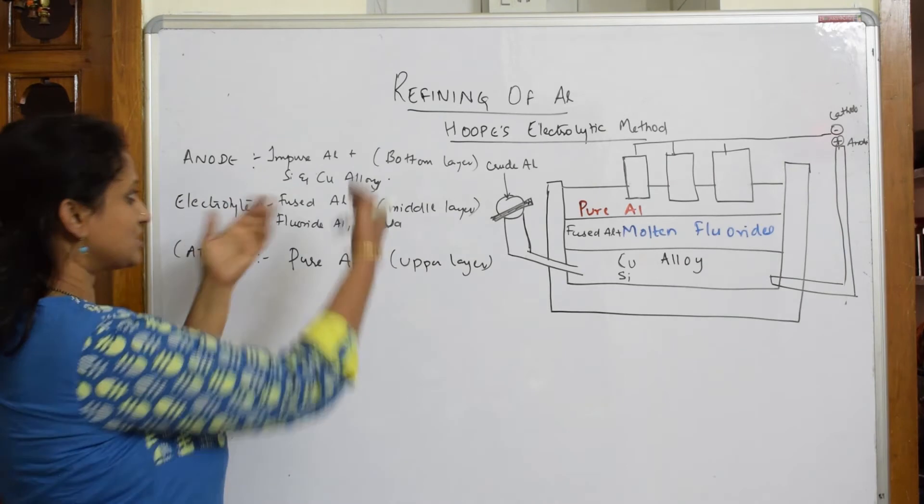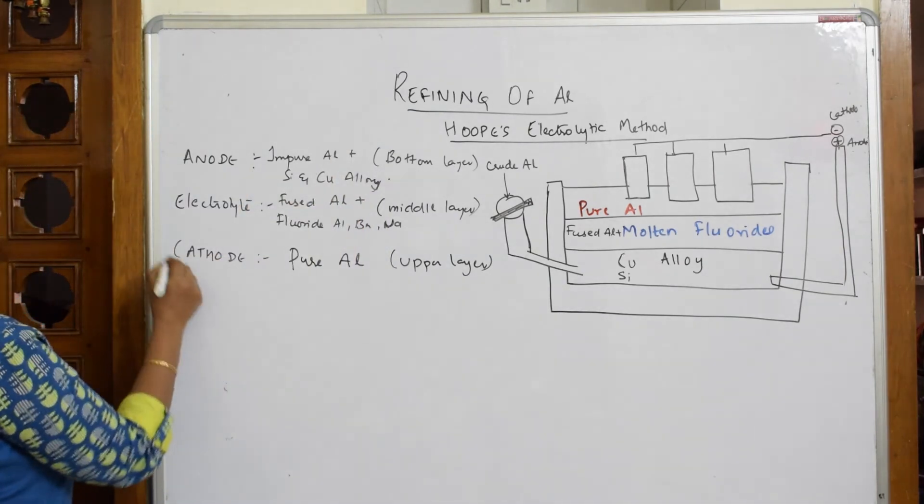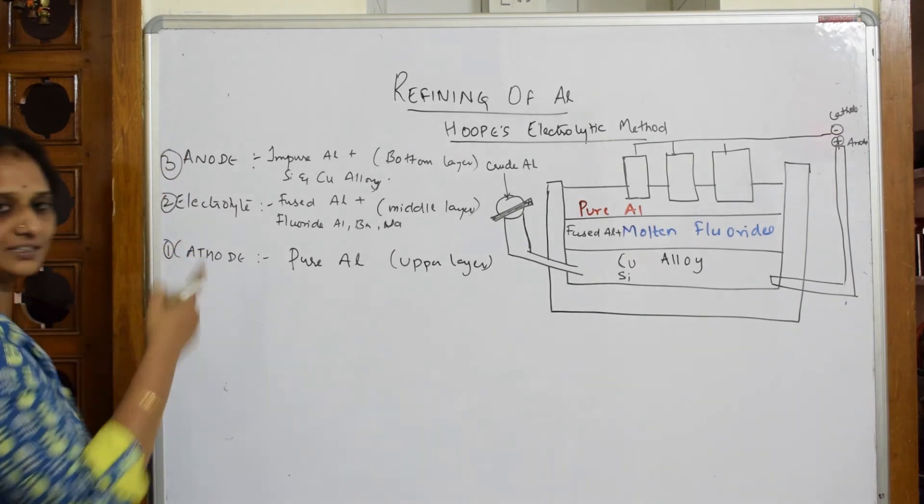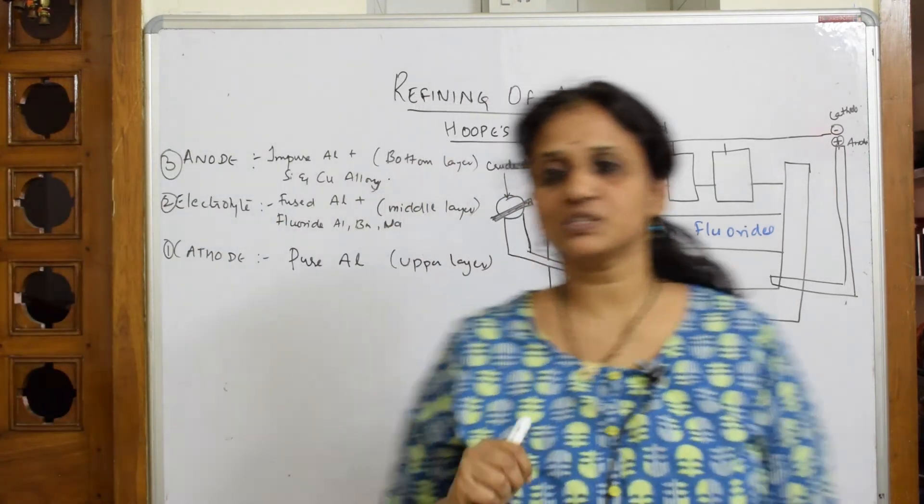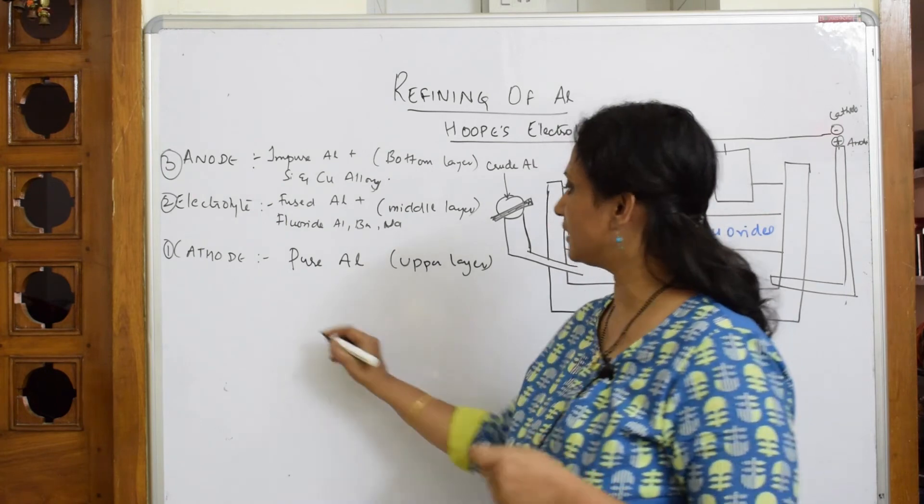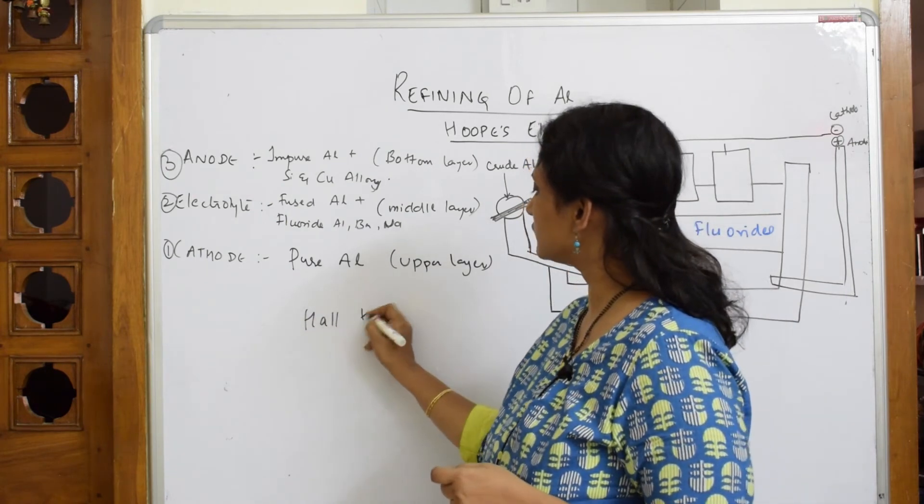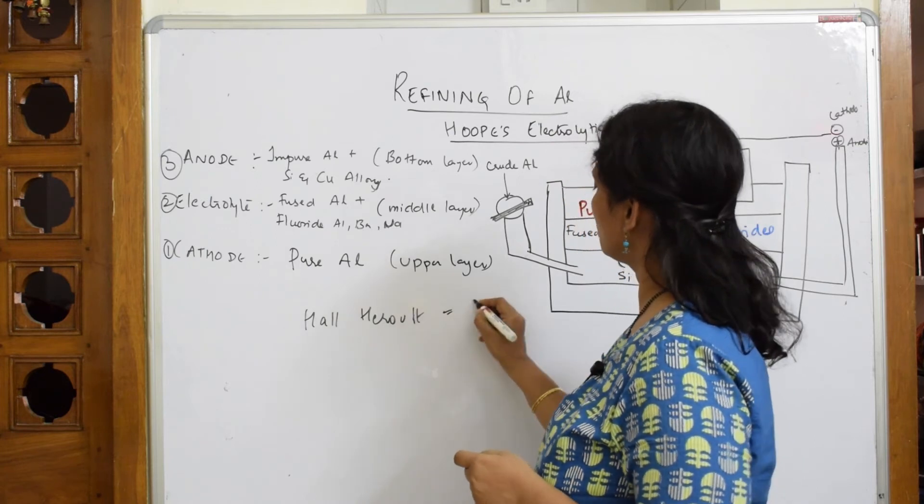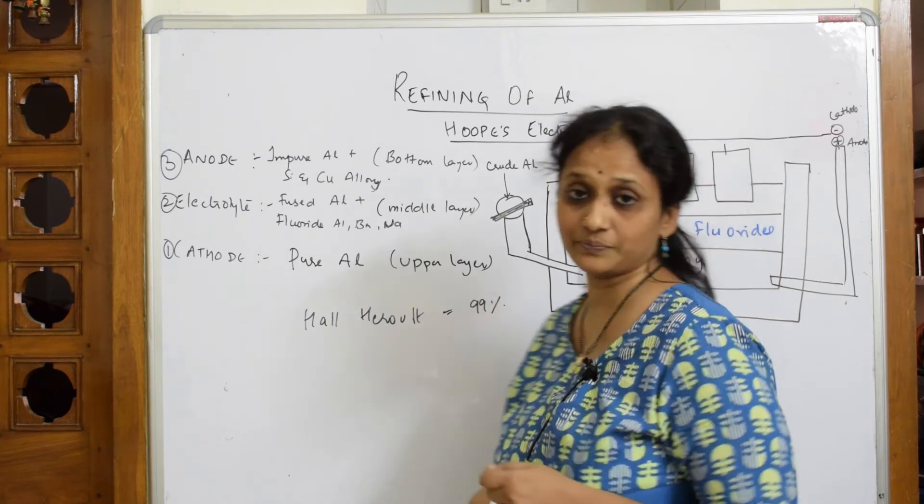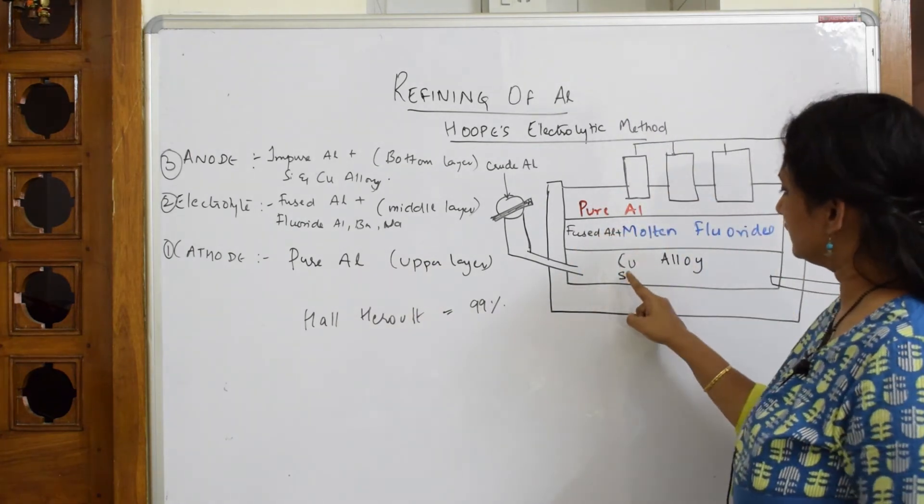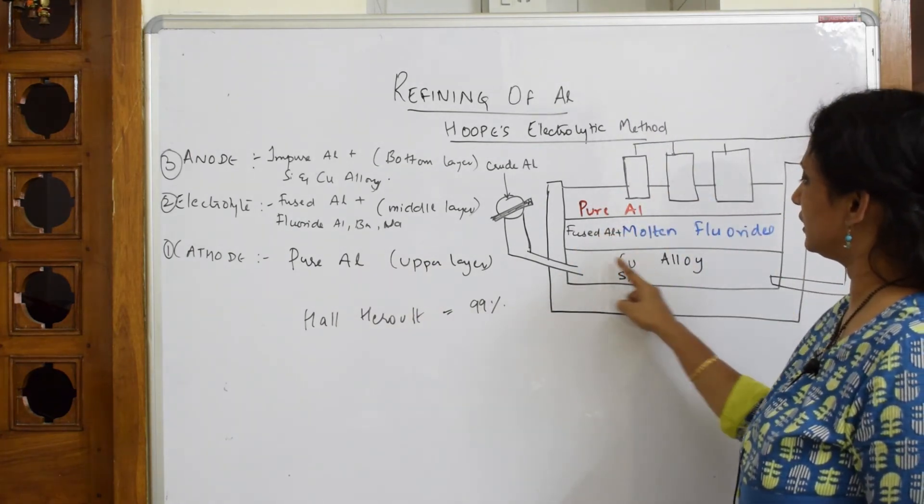Yes, the second layer is the electrolyte and the third layer is this. So don't get confused. I have written in the reverse order. This is one, this is two, this is three. This is the point, please write it properly. Now what happens? We very well know Hall-Heroult process. The amount of aluminum which is obtained in Hall-Heroult process is almost 99% pure.